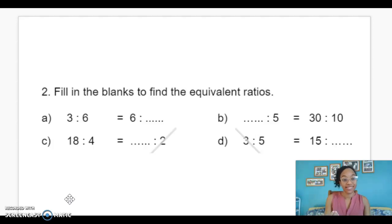3 to 6 is the same as 6 to what? Now, nobody better say 3. Remember that order matters in a ratio. So we're looking at a multiplication pattern here. Don't get confused because the number 6 was repeated twice. 3, to get from 3 to 6, we need to multiply by 2.